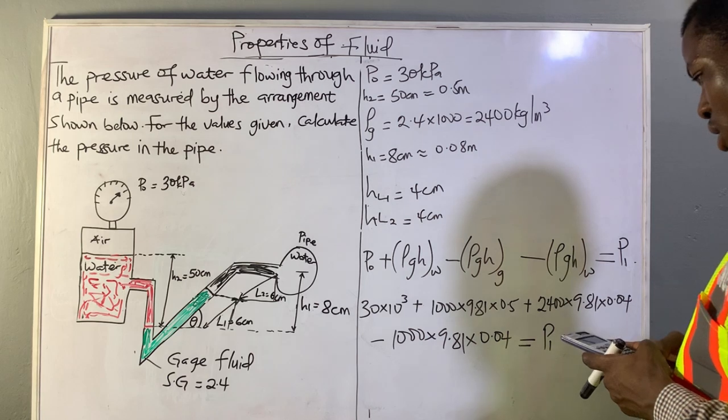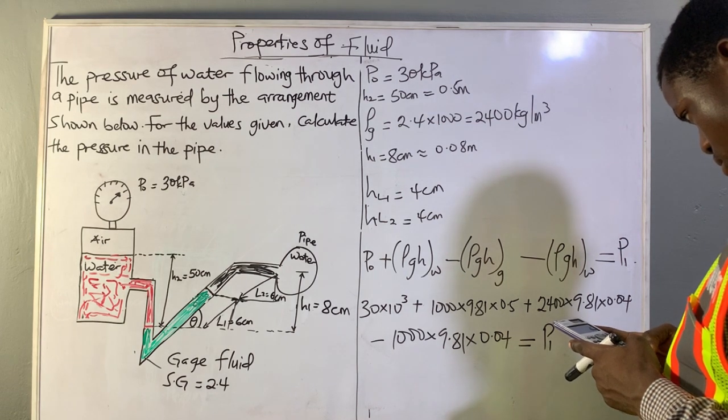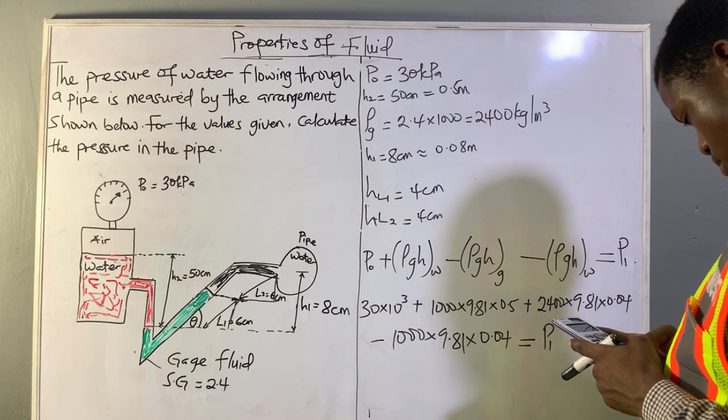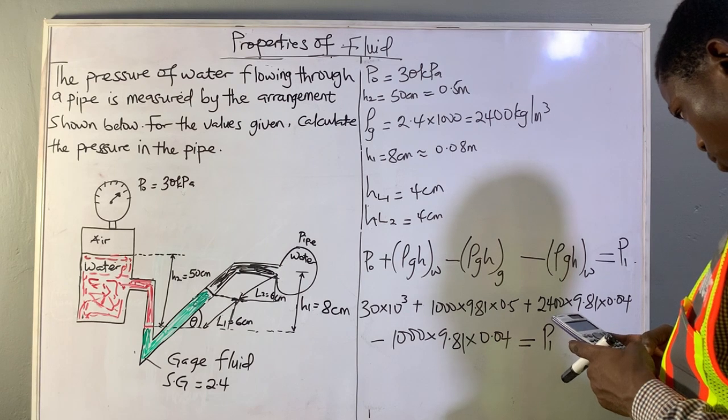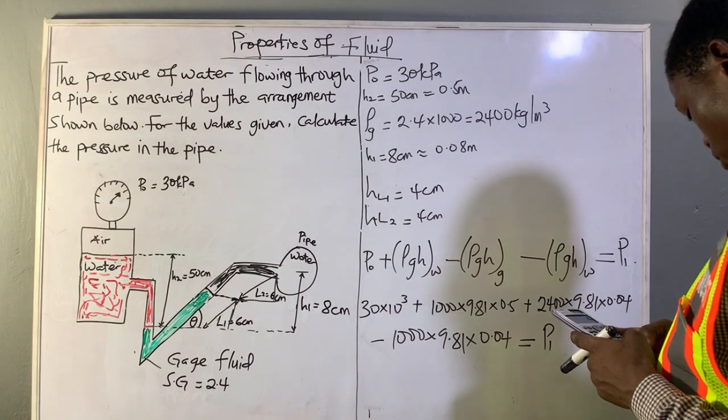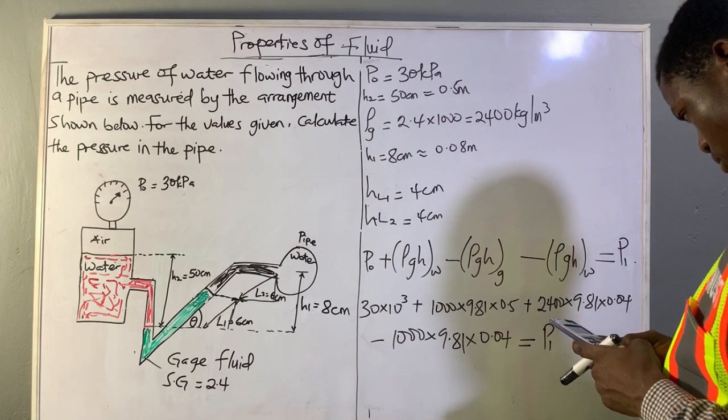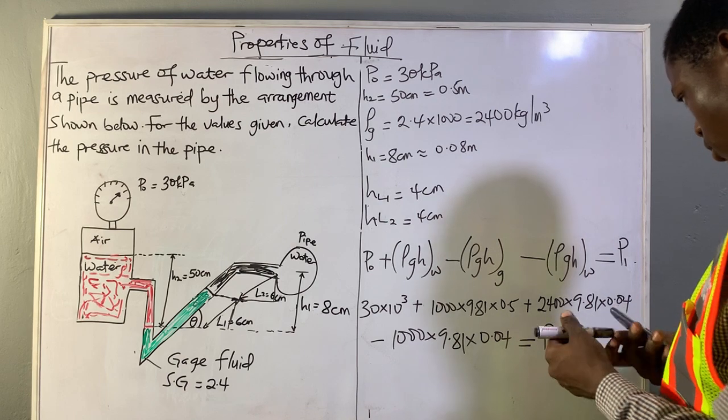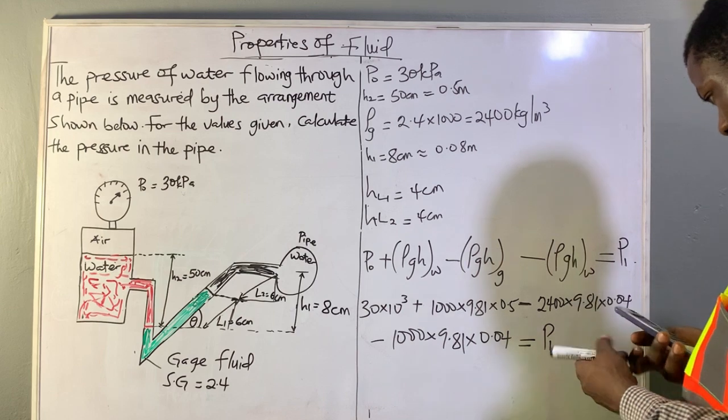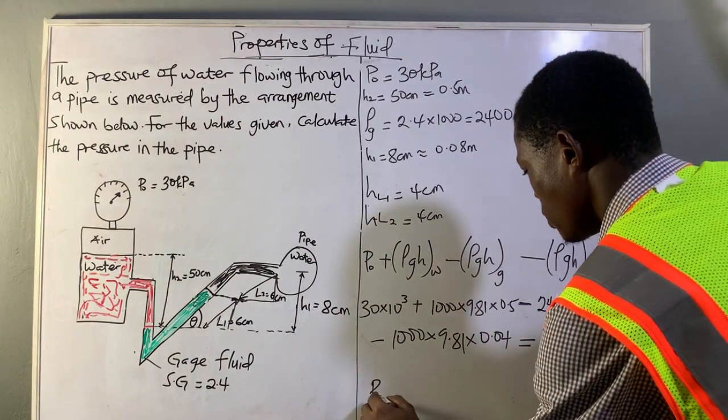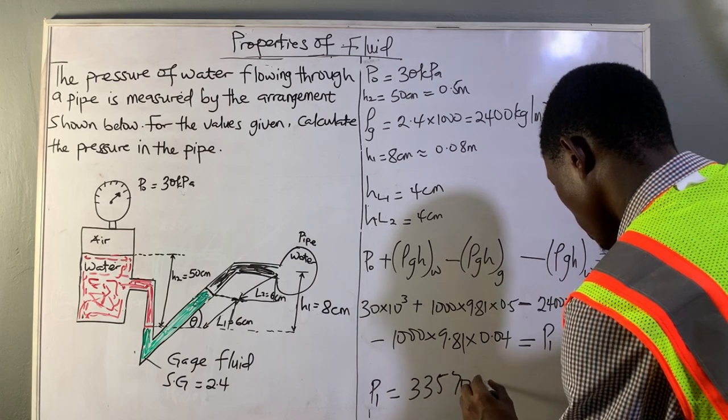Now we use our calculator to find the values. I'm sorry, this was supposed to be negative, so we are going to get P1 to be equal to 33570.84 Pascals.